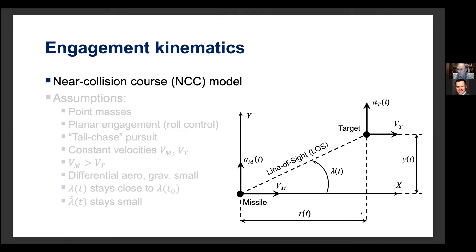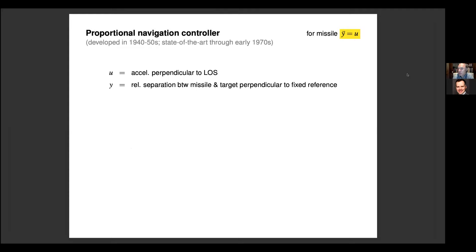Here is a sketch of a missile guidance pursuit-evasion problem. The missile is trying to hit the target; there's a line-of-sight angle λ, and for small angles, the relevant variable is the perpendicular component y, which is the subject of control. The simplest formulation of a missile guidance problem is a double integrator, nothing more. Proportional navigation was developed — I'm guessing in the 1940s, certainly no later than the 1950s — and this feedback remains in use.